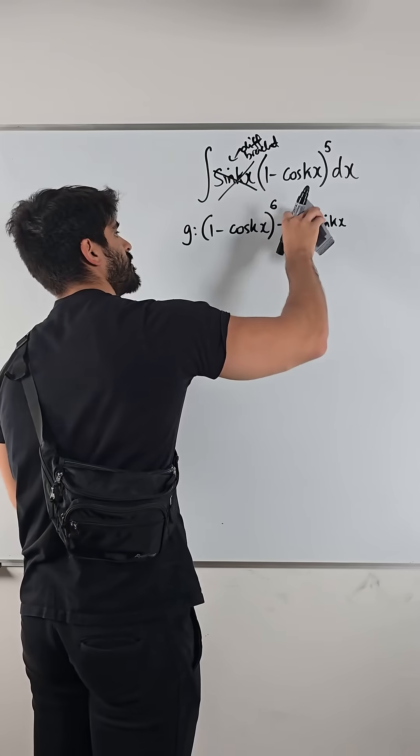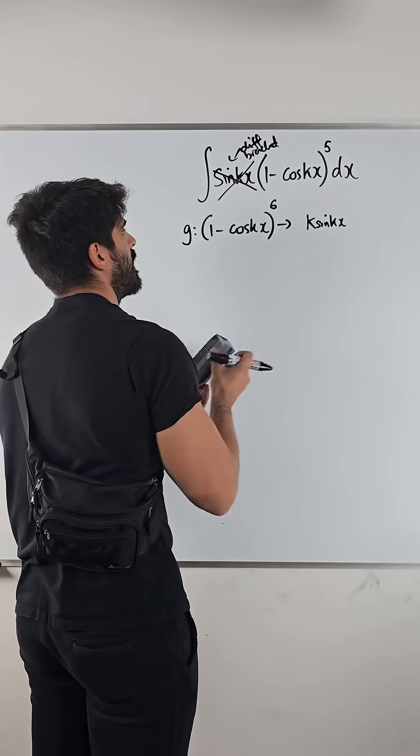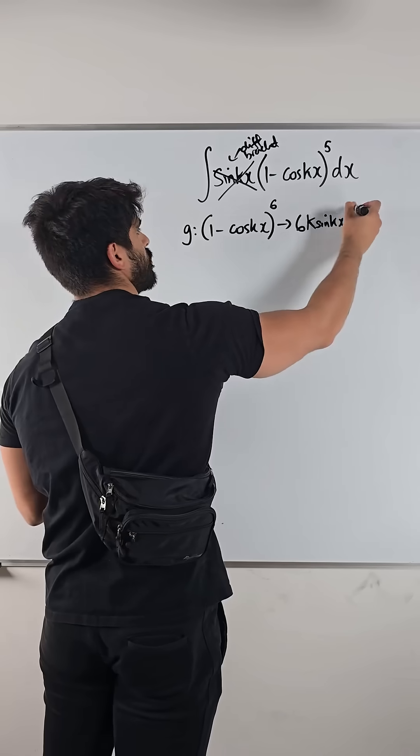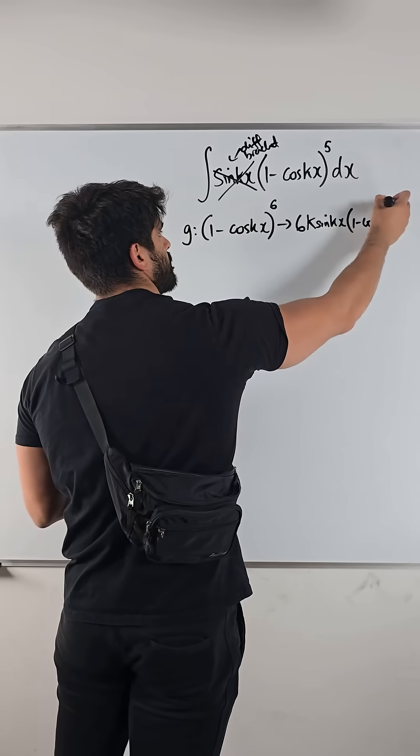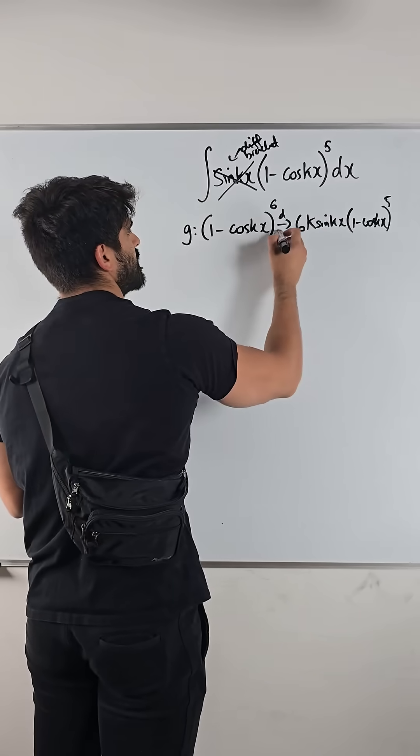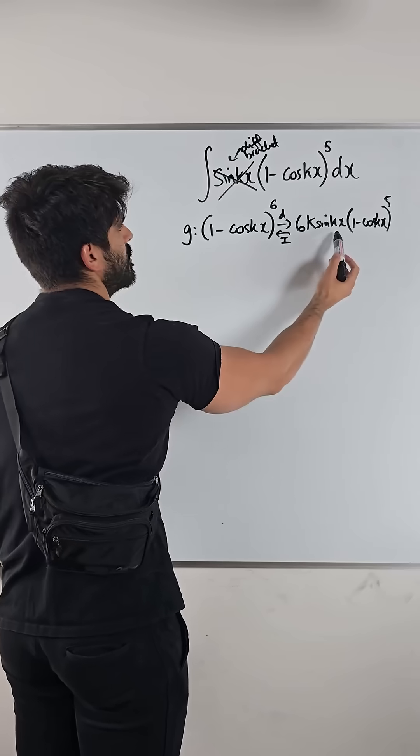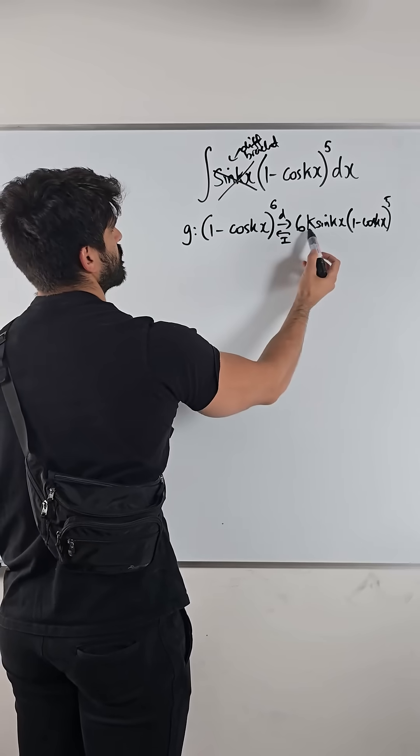Then what else happens? We differentiate that, then we bring down the power, and then we knock one off the power. Okay, so that differentiates this. This integrates back to this.